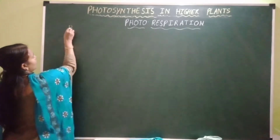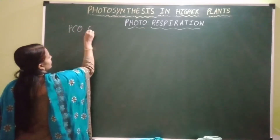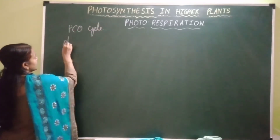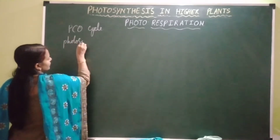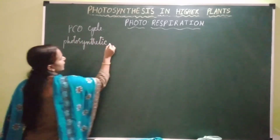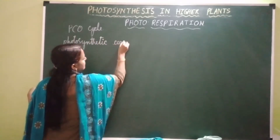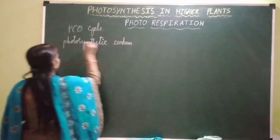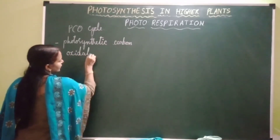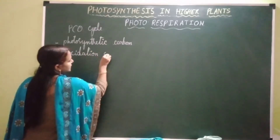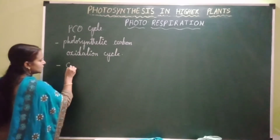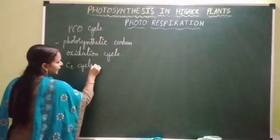This photorespiration is also called the PCO cycle — that is the photosynthetic carbon oxidation cycle. It is also called the C2 cycle because the substrate for this pathway is a two-carbon compound.